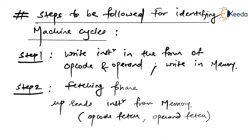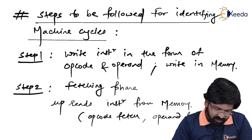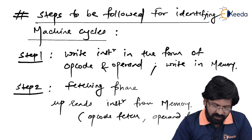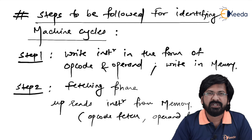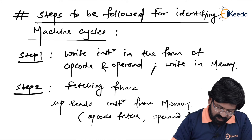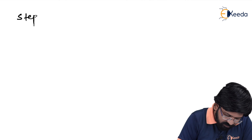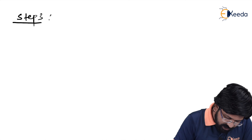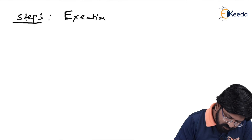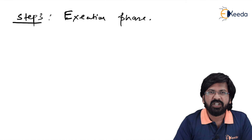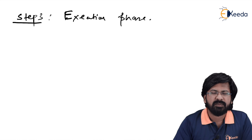I would request you to write down these steps because in this video we are only covering the steps, and actual examples will start in the next video. It is better to have these steps written so you can refer to them when working through examples. Step 3 is the execution phase. After fetching, the processor decodes the instruction, and then execution begins. Decoding does not require machine cycles as it is an internal operation.